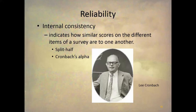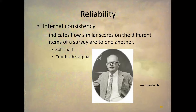Another way of measuring reliability is internal consistency. As the name implies, this is internal to one test, and we measure it internally because for some reason we don't want to give two tests over a certain time period — it's impractical, or something about the trait or test makes it very difficult. For example, people may respond to the test the first time taking it, and that may change how they respond the second time — very much like the testing threat in internal validity. When you have situations like that and can't use test-retest, you look at internal consistency. There are two ways to calculate this: the split-half method and calculating Cronbach's alpha.